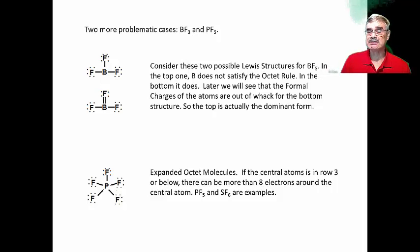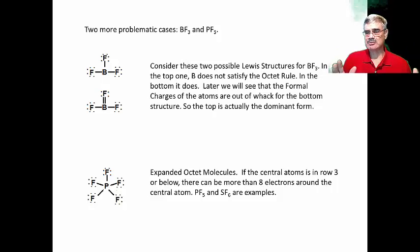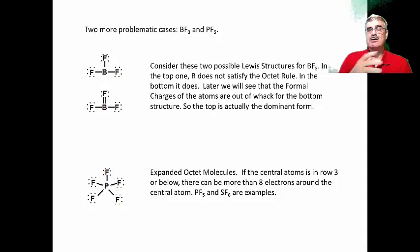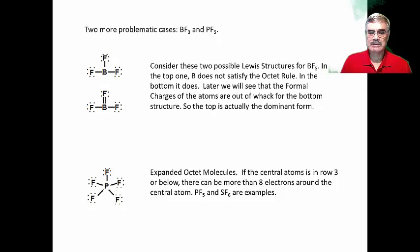The last concept for this video lecture is the expanded octet. PF5, phosphorus pentafluoride, is an example with VT = 40. Following all the rules — phosphorus in the middle, five fluorines around it, distributing those 40 electrons — the phosphorus winds up with 10 electrons around it instead of eight. We will learn that for certain molecules where the central atom is in the third row or below, you can have more than eight electrons around the atom — the octet can be expanded to 10 or even 12 electrons. We'll pause here and continue these discussions in the next part.